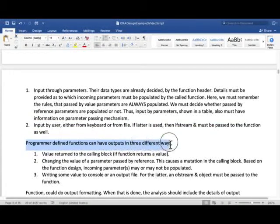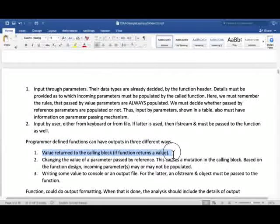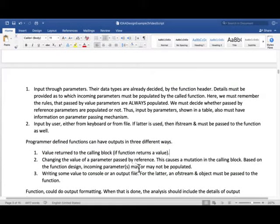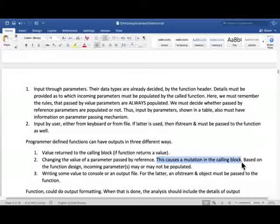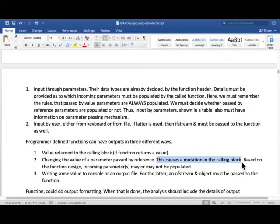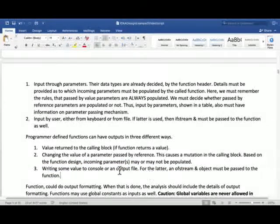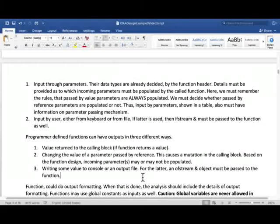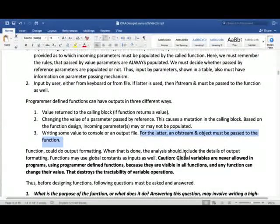Programmer-defined functions can have output in three different ways. Value returned to the calling block if function returns a value - that means it's a non-void function. Changing the value of a parameter passed by reference, and this will cause mutation in the calling block. Remember the swap function: as soon as swap took place in the swap function, right away the mutation took place in the calling block as well. Based on function design, incoming parameters may or may not be populated. Or function may write some value to console or an output file - that's another way of outputting value. If we are writing to an output file, we must pass an ofstream object to the function. Function can also do some output formatting. When that is done, analysis should include the details of output formatting.